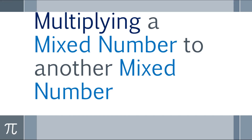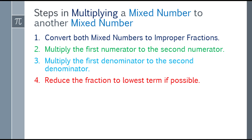Our last topic is multiplying a mixed number by another mixed number. The steps are: first, convert both mixed numbers to improper fractions. Second, multiply the first numerator by the second numerator. Third, multiply the first denominator by the second denominator. And the last step, reduce the fraction to lowest terms if possible.